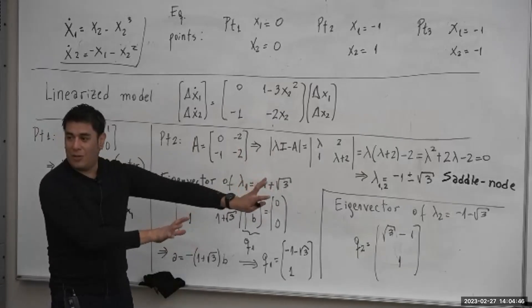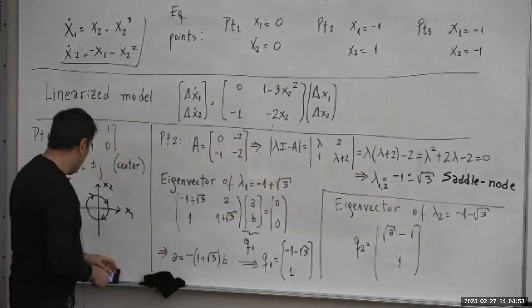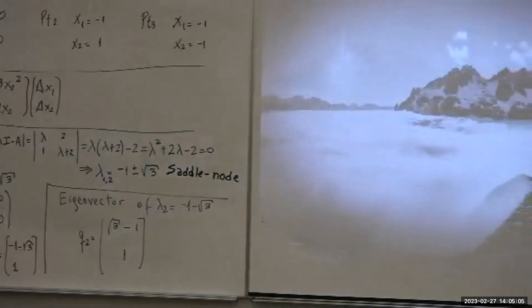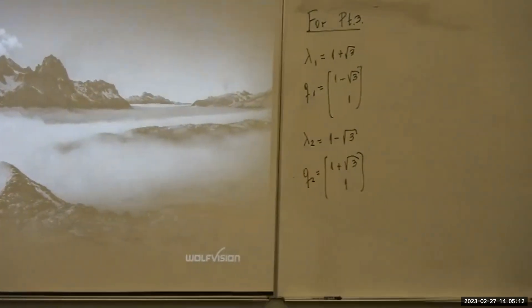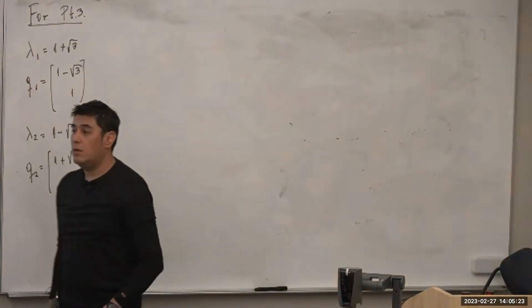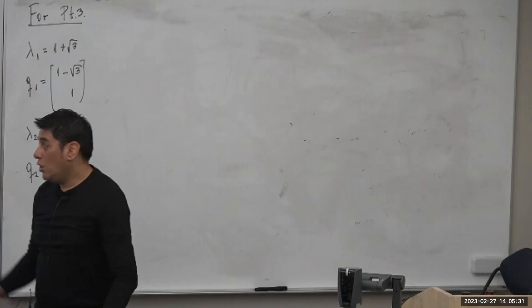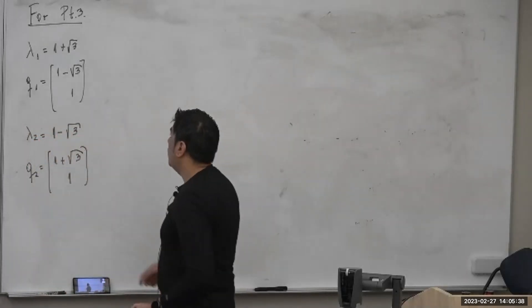We had finished computing eigenvalues and eigenvectors before I got sick, but couldn't finalize the phase portrait. I'm not going to spend more time on calculating eigenvalues and eigenvectors — any questions on that? One student mentions confusion from the second homework about drawing the phase portrait from the two eigenvalues. We will go ahead and finish that now, and also do the last equilibrium point, point three.